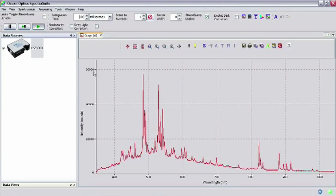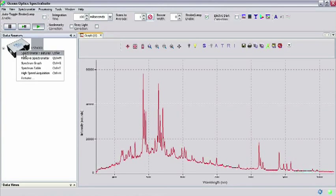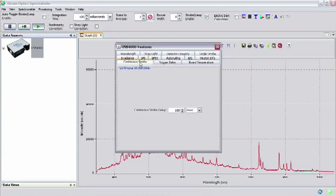If you're using multiple mode, select Spectrometer, then Spectrometer Features. Click on the Continuous Strobe tab and enter the Continuous Strobe Delay. Be aware that the Continuous Strobe setting will be reset to the default if you go back and change the integration time.